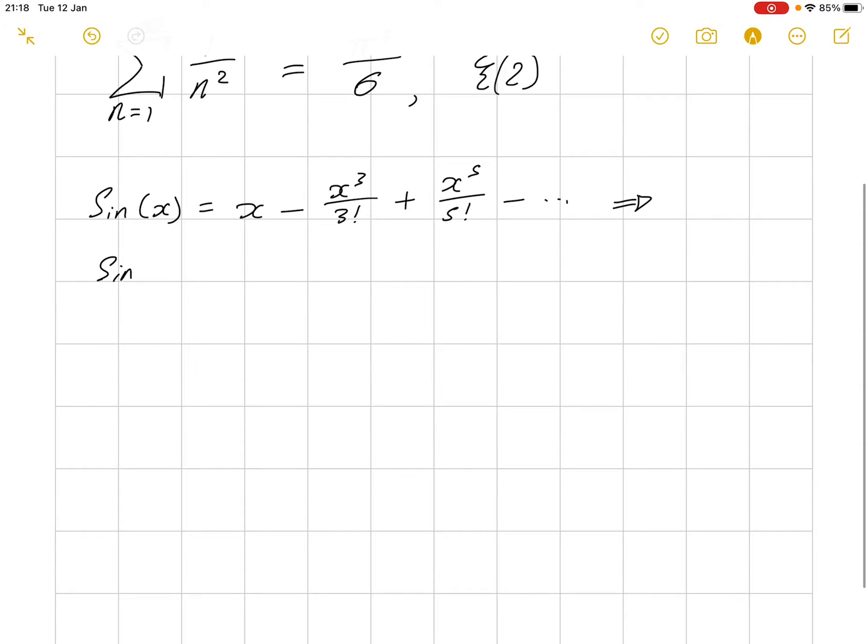So, we have that sin of x divided by x. This is 1 minus x squared over 3 factorial plus x to the 4 over 5 factorial minus and so on.